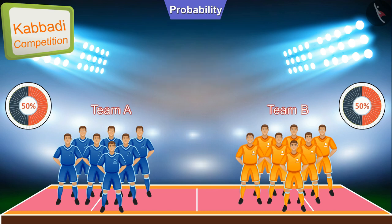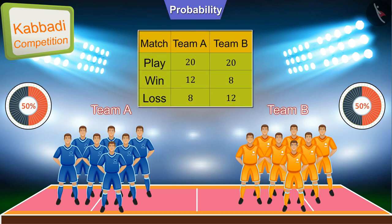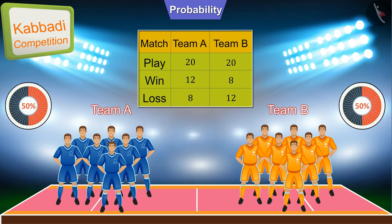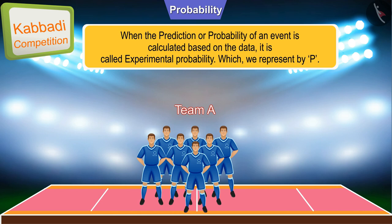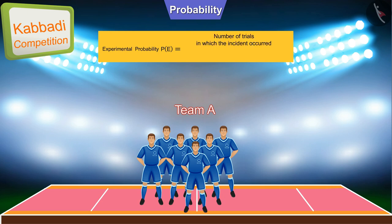Now, if we assume that both teams have already played 20 matches, out of which Team A won 12 matches, we will select Team A in the prediction of the winning team. The prediction or probability of an event calculated based on data is called experimental probability, which we represent by P. The experimental probability is the ratio of the number of trials in which the event has occurred to the total number of trials.